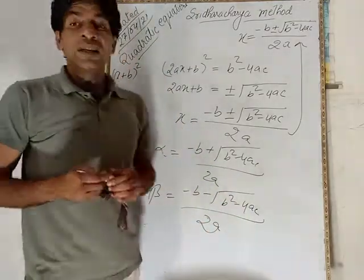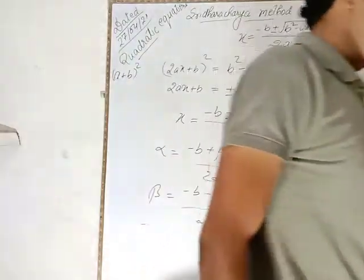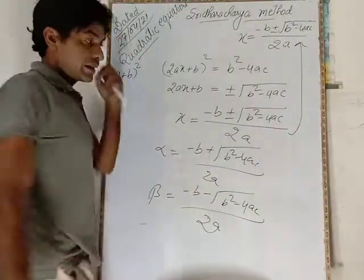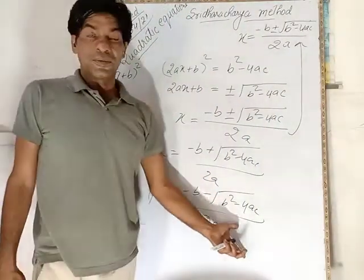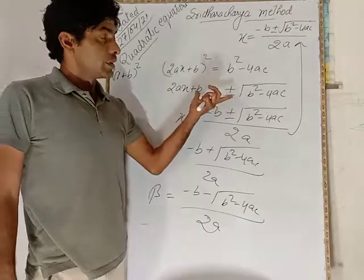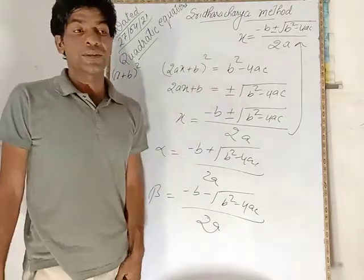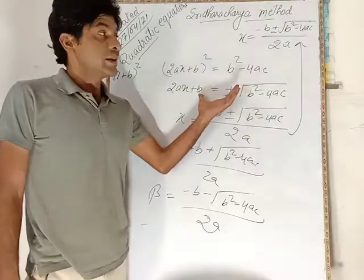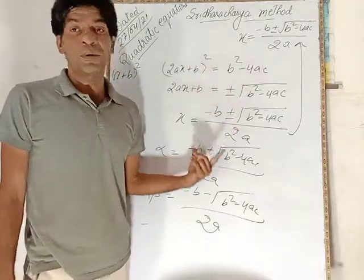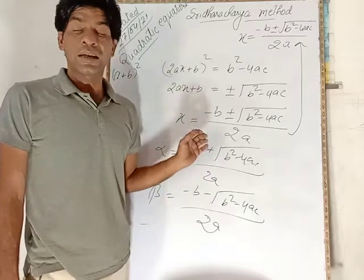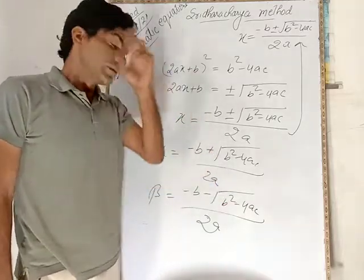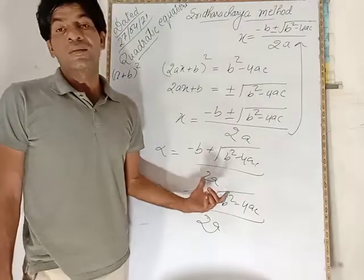In this way, Indian mathematics forwarded the method to solve quadratic equations. This is a very simple method. Only values you will put. If the calculation is correct and if you don't have any mistakes, then you will reach the conclusion of alpha and beta.